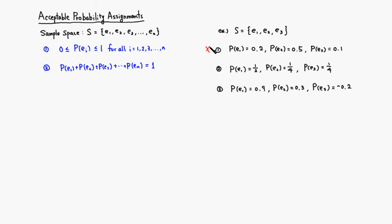Now let's look at the second example. Probability of e1 is 1/2, probability of e2 is 1/4, probability of e3 is 1/4. It satisfies condition one. Let's add them all up: 1/2 plus 1/4 plus 1/4 is exactly equal to 1. Therefore the second example is an acceptable probability assignment.